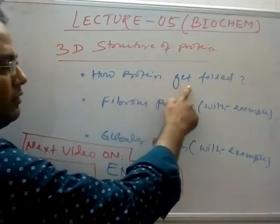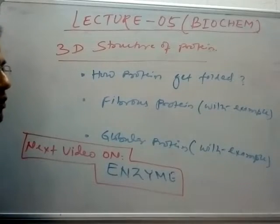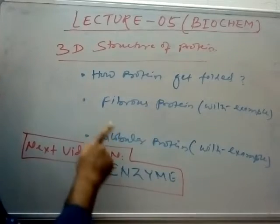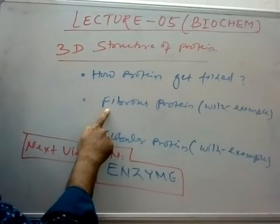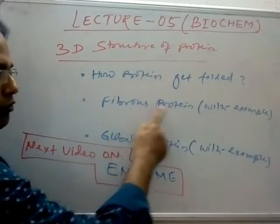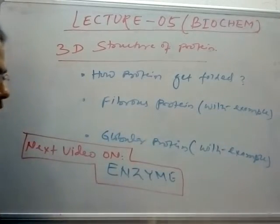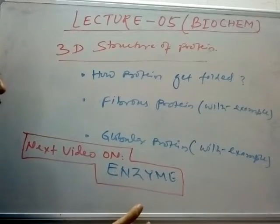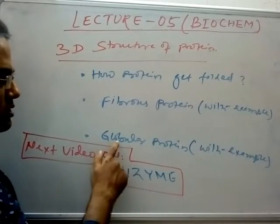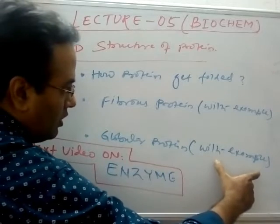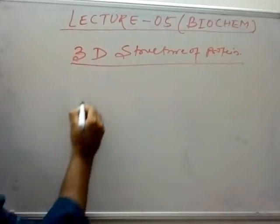First is how proteins get folded — proteins usually get folded and then become functional, so what is the reason that proteins get folded. Second, we are going to see the types of three-dimensional structure: fibrous protein with examples and structure, and after that globular protein with examples.